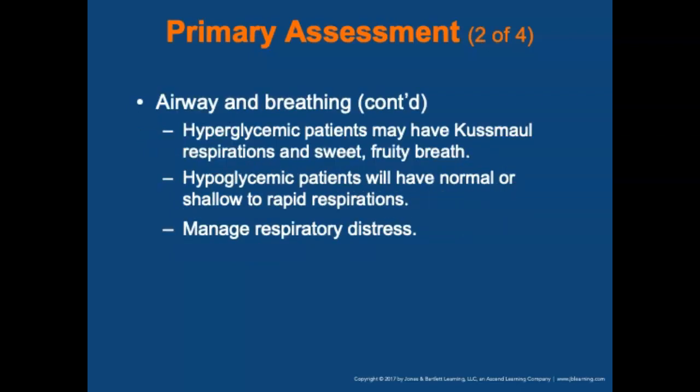High-flow O2 is 12 to 15 liters per minute via non-rebreather mask. Hyperglycemic patients may have rapid, deep Kussmaul respirations and a sweet, fruity breath. Hypoglycemic patients will have normal, shallow, or rapid respirations. If the patient is not breathing or is having difficulty breathing, open the airway, insert an airway adjunct, administer O2, assist ventilations if unconscious, and continue to monitor ventilations throughout patient care.